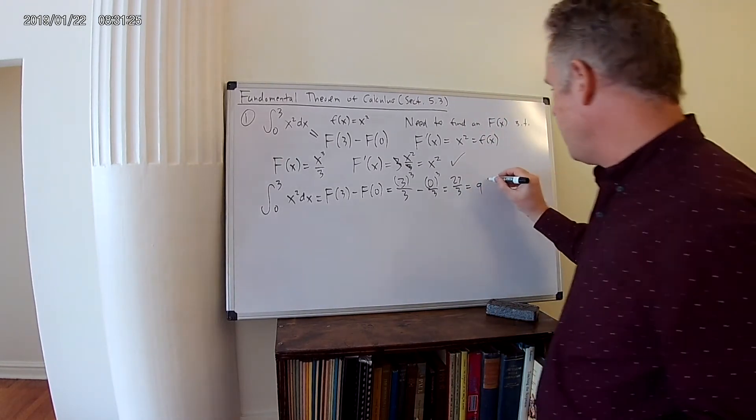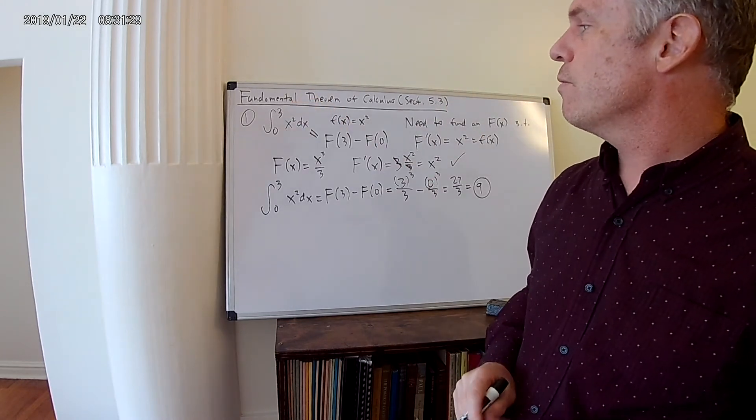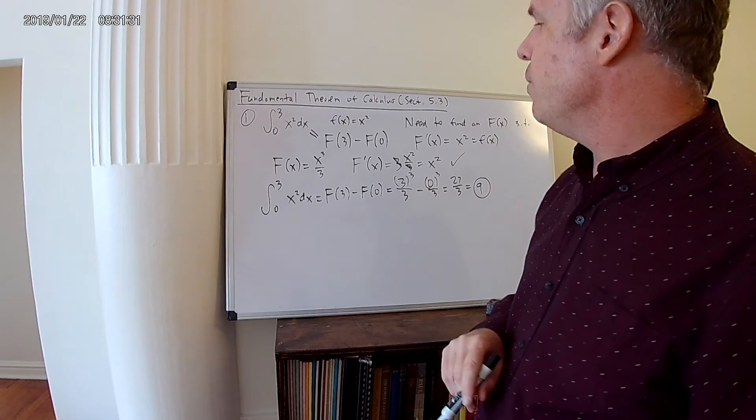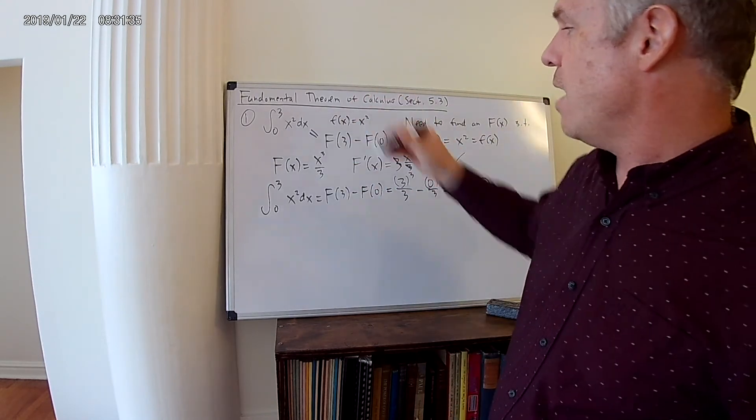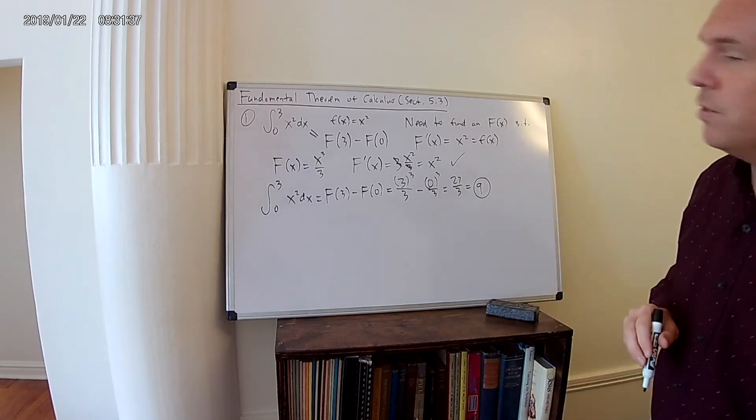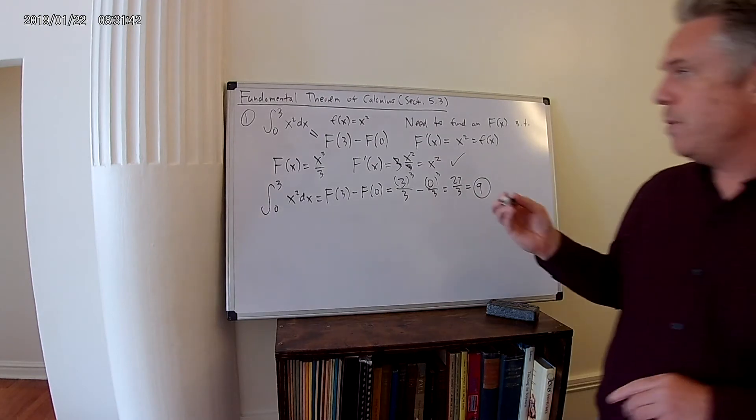So this is pretty cool. This is our answer. This is the exact area under this curve from 0 to 3 of x squared. And we did this by finding, by being clever and finding the antiderivative of f(x). So this is how we evaluate an integral.